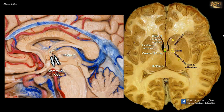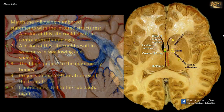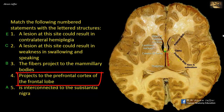The medial group of thalamic nuclei is connected to the prefrontal cortex and is thought to be involved in affective states, judgment, and some aspects of memory. These connections are through the anterior limb of the internal capsule. Thus D matches with 4: projects to the prefrontal cortex of the frontal lobe. Note that the anterior limb of the internal capsule also contains corticopontine fibers.